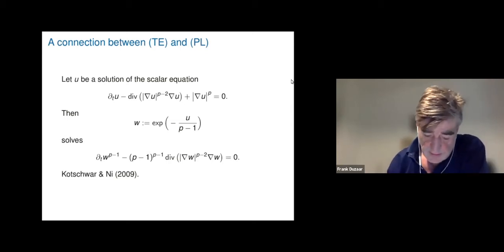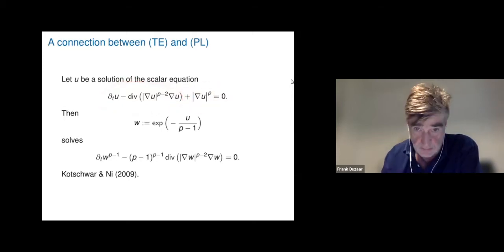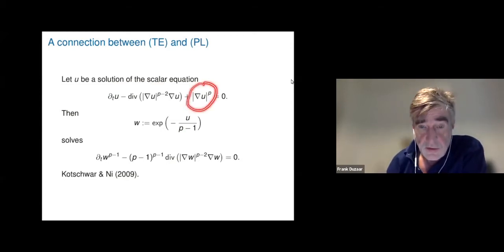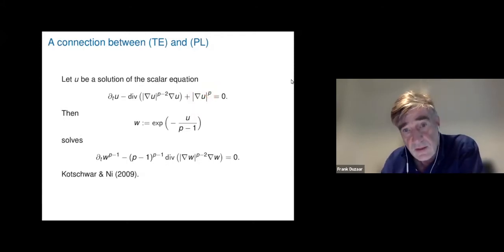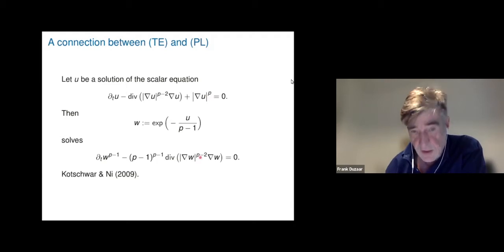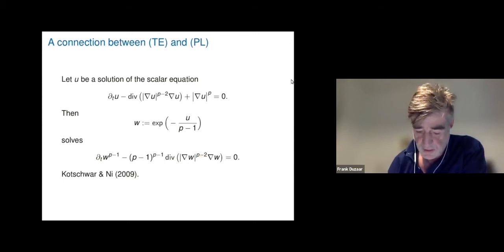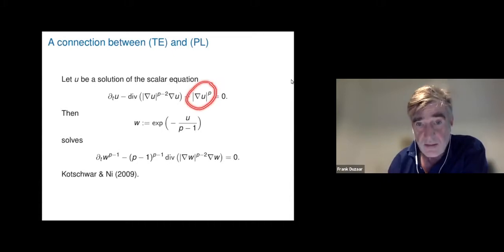The parabolic p-Laplacian equation has a natural growth nonlinearity in the gradient — it's critical, exactly exponent p. Even in the homogeneous case, doing this transformation yields a very nasty term u^p, making Trudinger's equation potentially more difficult to treat.